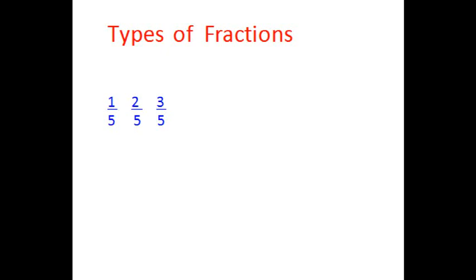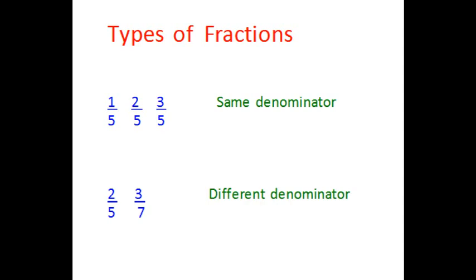Let's look at types of fractions. Here we have three fractions: 1 over 5, 2 over 5, and 3 over 5. The denominator is the same for all of these fractions. Now let's look at some more fractions: 2 over 5 and 3 over 7. Here the denominator is different. When the denominator is the same, it is easy to compare.